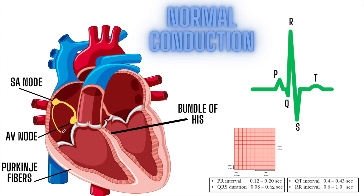When the SA node fires off a signal, it goes to the AV node, and it also comes around both sides, which depolarizes both of your atria at one time — that's what gives you your squeeze on top. Underneath, you come down to what's called the bundle of His, which sets the tone for your ventricles. From the bundle of His you've got two separate pathways — that's where left and right bundle branch comes in, because the bundle of His separates into two branches.